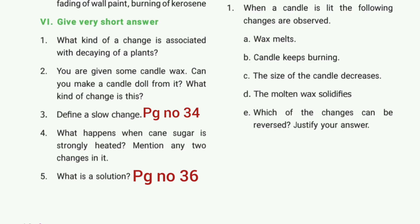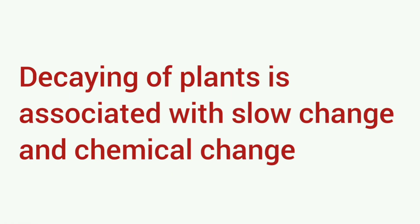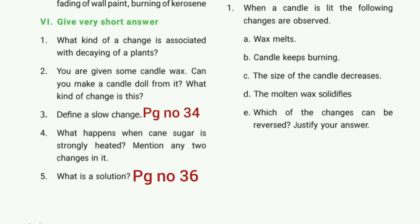Give very short answer. First question: what kind of a change is associated with declining of a plant? The answer is: declining of plants is associated with slow change and chemical change.